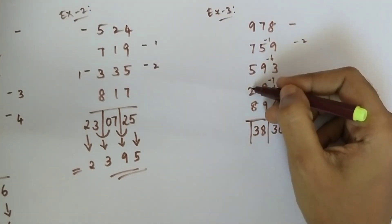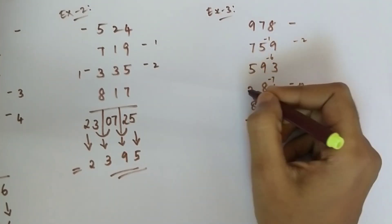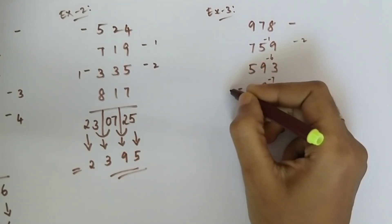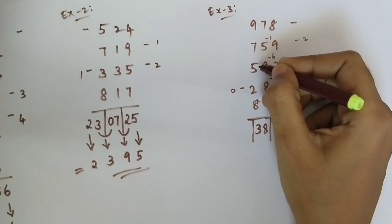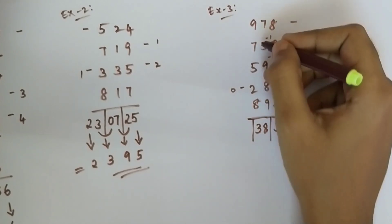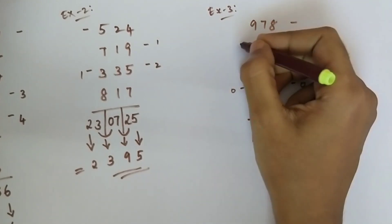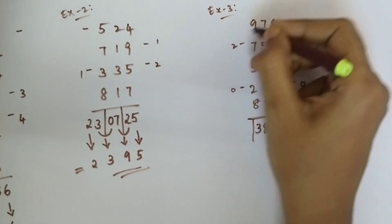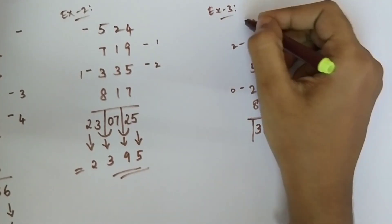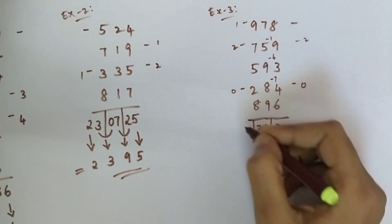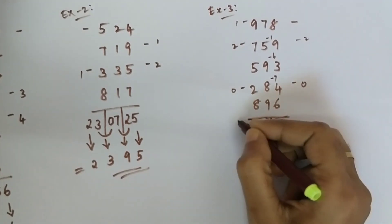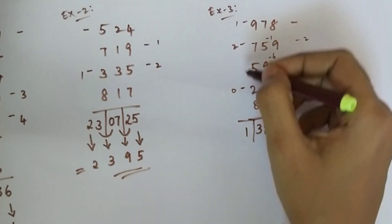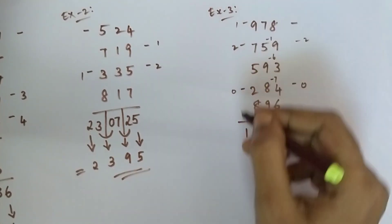8 plus 2 is 10, 0 plus 5 is 5, 5 plus 7 is 12, 2 plus 9 is 11. There are 1, 2, and 3 bars.